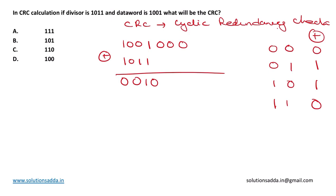So the result is: 1 XOR 1 is 0, 0 XOR 0 is 0, 0 XOR 1 is 1, 1 XOR 1 is 0. We bring down the two zeros and again perform the XOR operation with the divisor 1011.